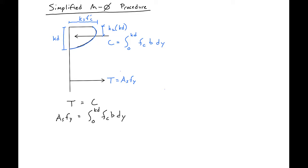We will approximate the area of our integral using a factor K1. So we'll take K1 times Kd times B times K3 F'c, and this will equal our Asfy.